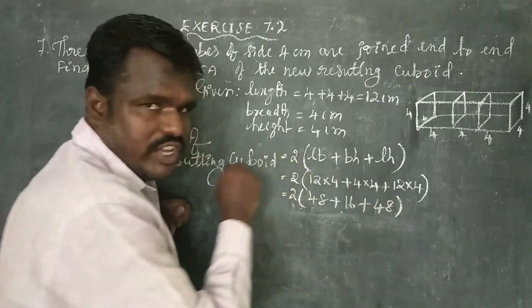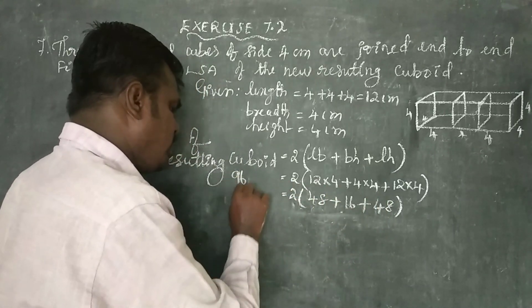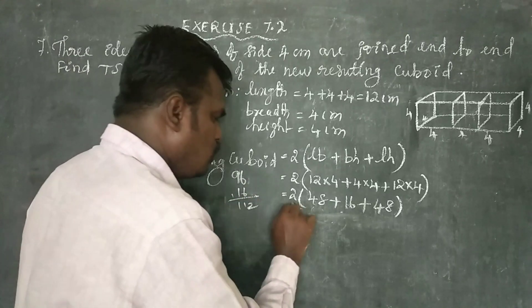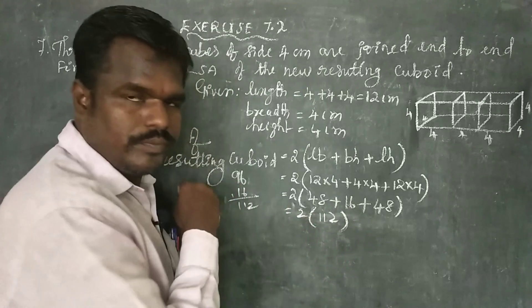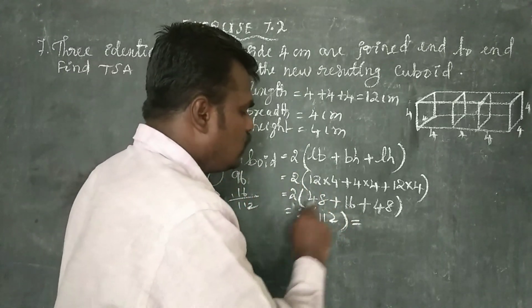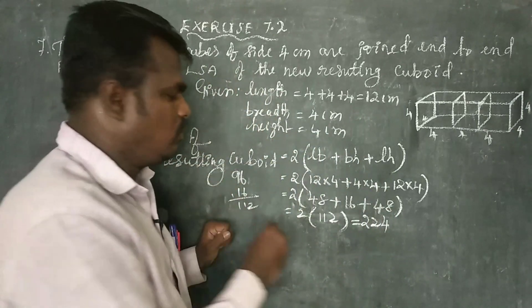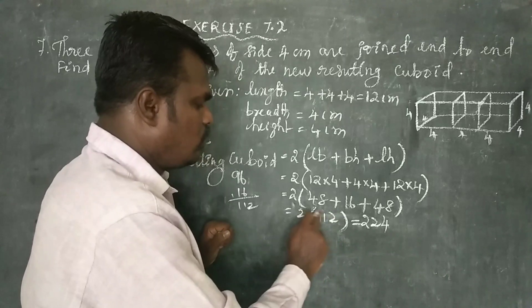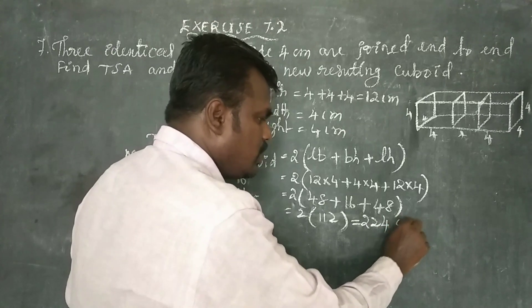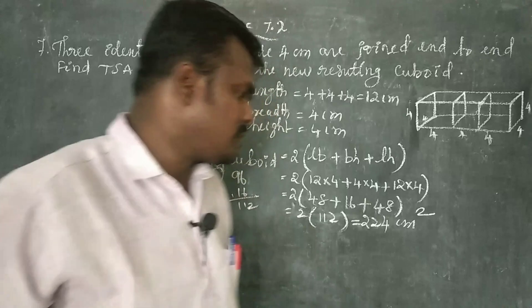Calculating: 48 plus 16 plus 48 equals 112. Then 2 into 112 equals 224. Therefore, TSA of new cuboid equals 224 centimetres square.